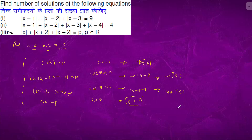So we have the solution: p belongs to 4 to infinity. We are getting lots of solutions. However, p is valid only from 4 up to 6, out of p belonging to the reals.